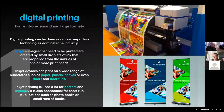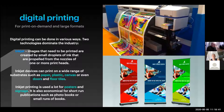Inkjet is economical for short run publications such as photo books or small runs of books. On the right hand side the images show a huge plotter — probably six feet wide — and below it are the roller boxes for different materials: paper, vinyl for outdoor banners, etc. The bottom image shows an example of pop-up banners that you print on those machines and then roll up into the metallic base at the bottom.